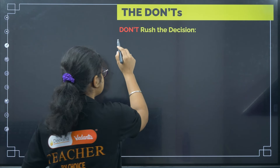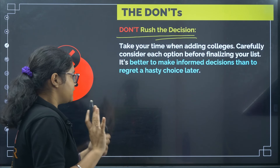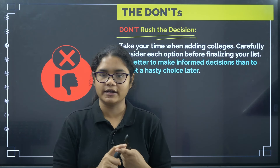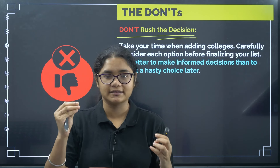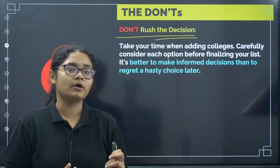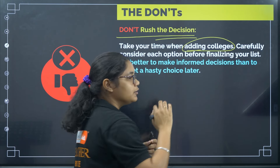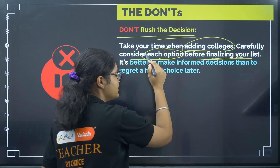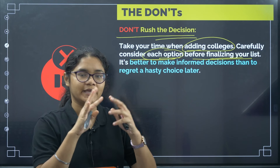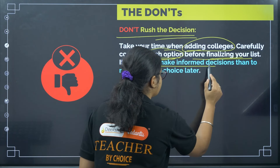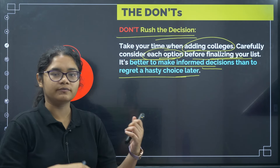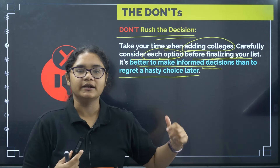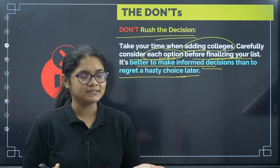The fifth don't: don't rush the decision. Option entry and adding colleges is the most crucial thing, on the basis of which you will be allotted a college. The next four to five years of your studies depend on the option entry you are preparing today. Take proper time when adding colleges, do proper research, and carefully consider each option before finalizing your list. Check the cutoff, placement record, faculties, and facilities for every option you add. It is better to make an informed decision than to regret a hasty choice later.